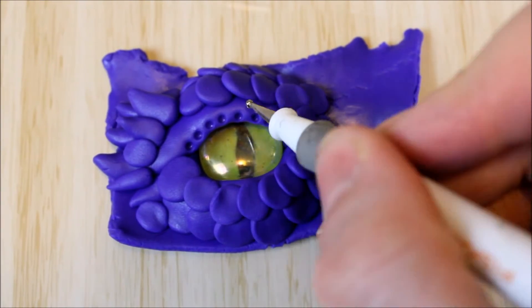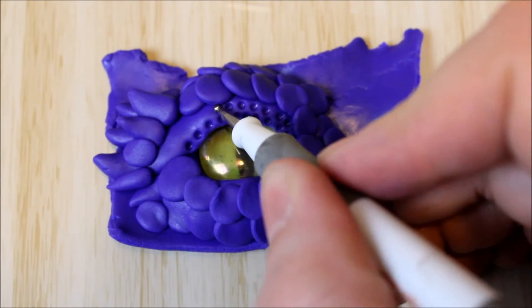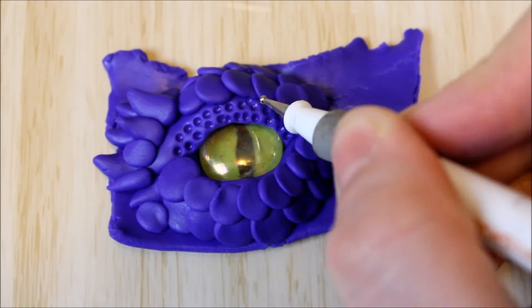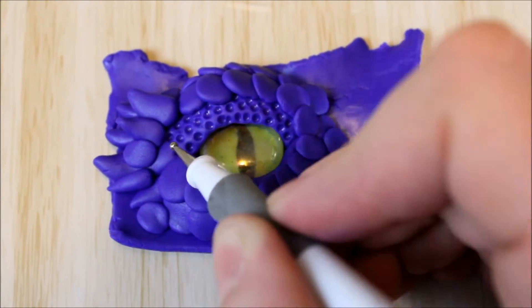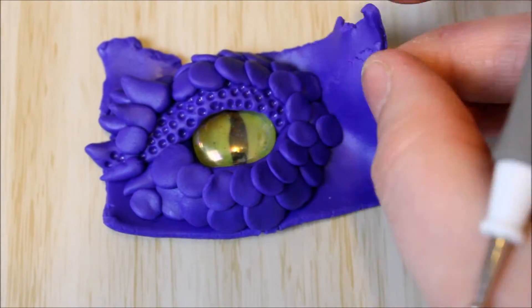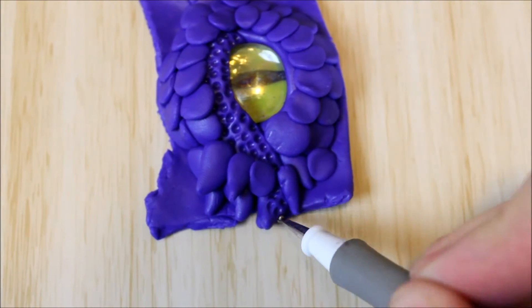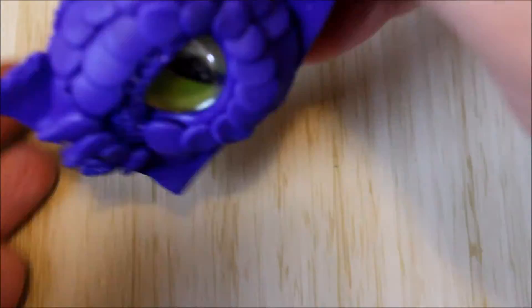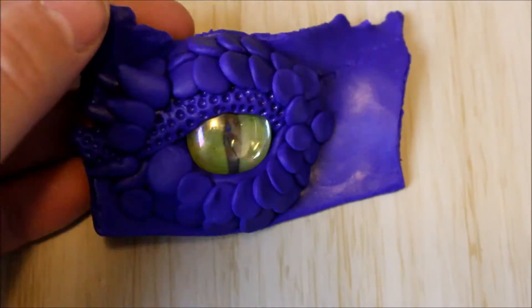I then went ahead and used a little dotting tool that you use for nail art as my little tool that I'm just making tiny little indents to create even more texture to the eyelid and making little bumps on his top eyelid continuing on to the spike at the back there as well.